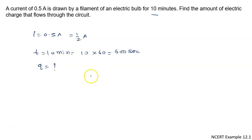We know current is given by rate of flow of charge, or Q upon t. So Q equals I into t. Value of I is 1 by 2, t is given to us as 600.